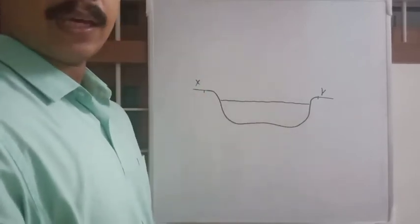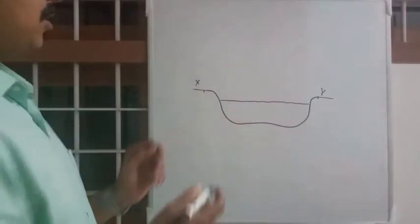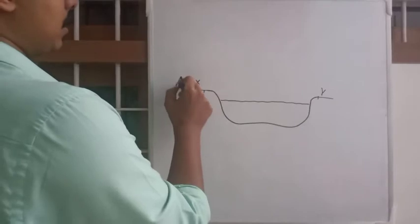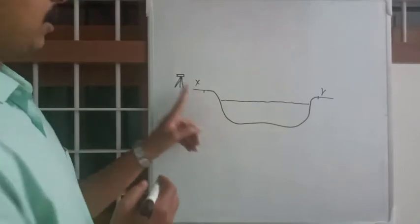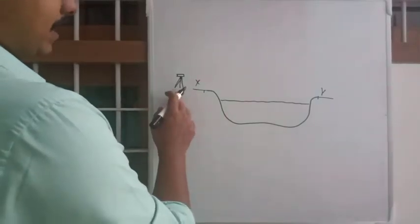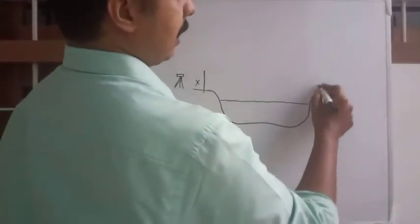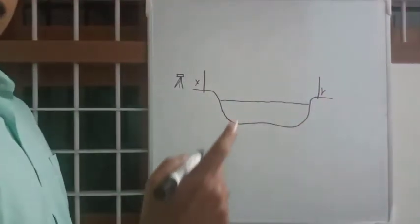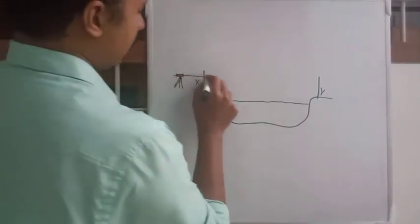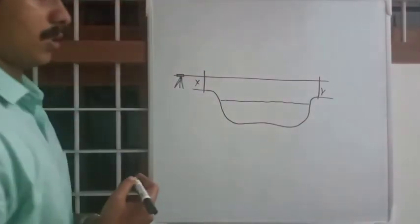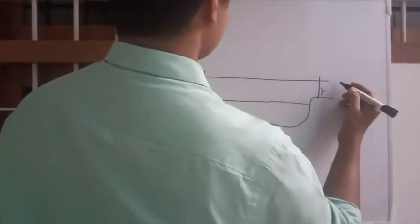So what we are going to do is: first, we will be placing the dumpy level near station X. The level staff will be held at X and the level staff will also be held at Y. Then we will take readings. The reading level line will be something like this — this is the level line.